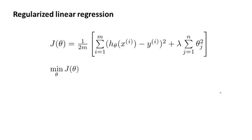Here's the optimization objective that we came up with last time for regularized linear regression. This first part is our usual objective for linear regression, and we now have this additional regularization term, where lambda is our regularization parameter. We'd like to find parameters theta that minimize this regularized cost function, j of theta.